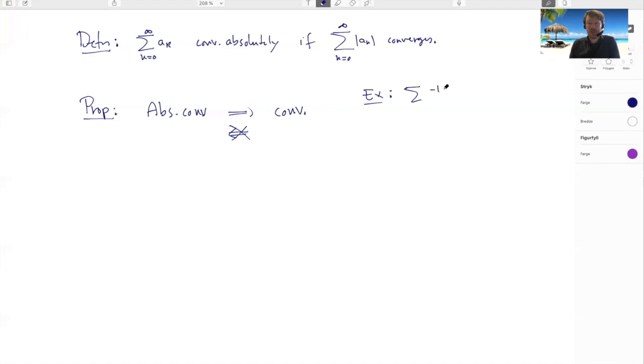If I'm doing (-1)^(k+1)/k, this is the alternating harmonic series and he converges. But if I kill the signs, I'm left with this guy, and this is the harmonic series, and this guy diverges.